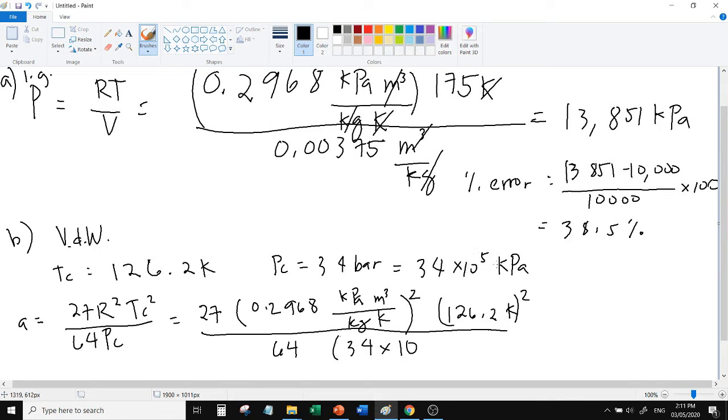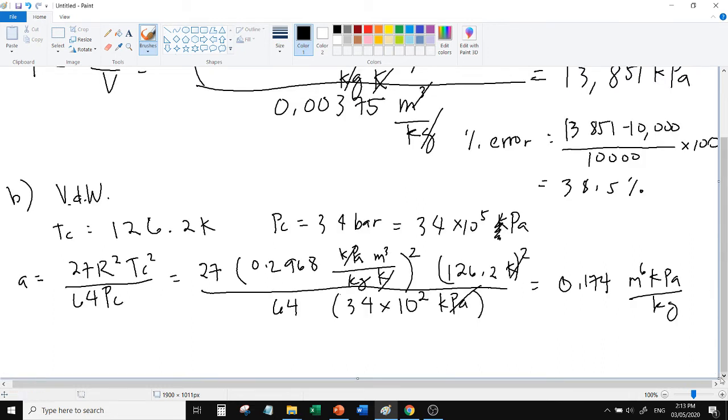Sorry, I made a mistake. This 34 times 10 to the 5 is in pascal. So 34 times 10 to the 5 pascal, to become kilopascal divide by 1,000, so it becomes 34 times 10 to the 2. One kilopascal will cancel, and then the two Kelvins. The answer here is 0.174 meter to the 6 kilopascal over kilogram.